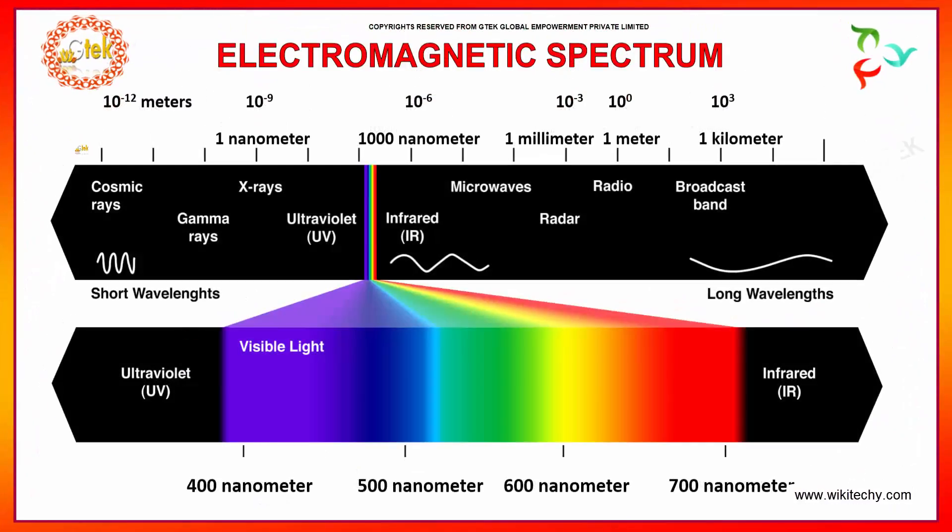If you talk about the electromagnetic spectrum, you've got your long wavelengths here and your short wavelengths here. This includes cosmic rays, gamma rays, X-rays, ultraviolet, visible light, infrared rays, microwaves, radar, radio, and broadcast band.